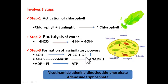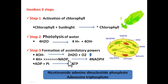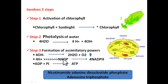In step three — formation of assimilatory powers — the four OH⁻ ions produced combine with each other to form water and oxygen. This is where oxygen is produced during photosynthesis. The H⁺ ions move in the chloroplast and combine with NADP — nicotinamide adenine dinucleotide phosphate — which is a biological molecule present in the chloroplast. The H⁺ ions combine with NADP to form NADPH.